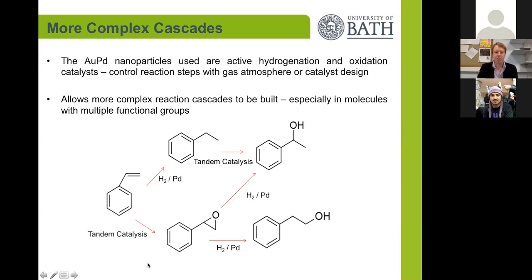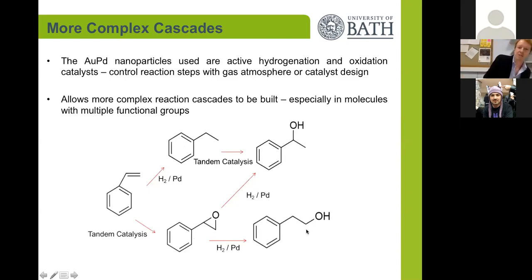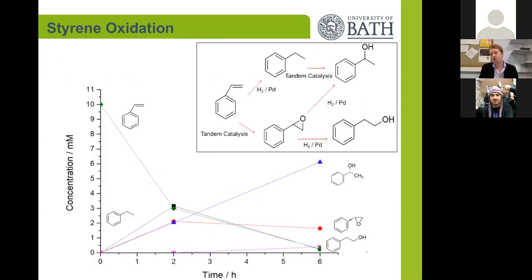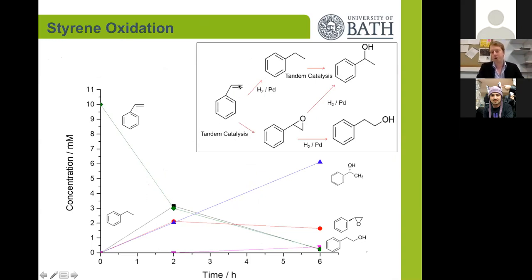Starting from a molecule such as styrene, you could first hydrogenate the molecule and then install the OH to produce a chiral alcohol. If you get the combined enzymatic system to act first, you could generate epoxides and then open this epoxide using the same catalyst to produce the terminal alcohol. This is where we're working at the moment — on these more complicated cascades — which boils down to catalyst design: can we make a catalyst which can produce hydrogen peroxide but not hydrogenate this double bond?